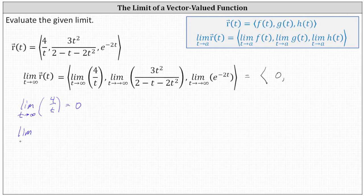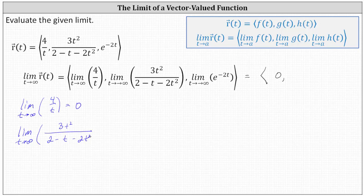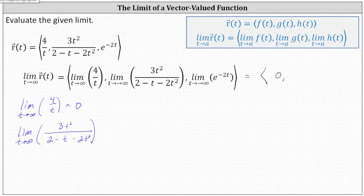We have the limit as t approaches infinity of three t squared divided by the quantity two minus t minus two t squared. To determine limits at infinity when we have a rational function and the numerator and denominator are polynomial functions, we only need to consider the term with the highest degree in the numerator and the term with the highest degree in the denominator, which means we can determine this limit by only considering three t squared over negative two t squared.